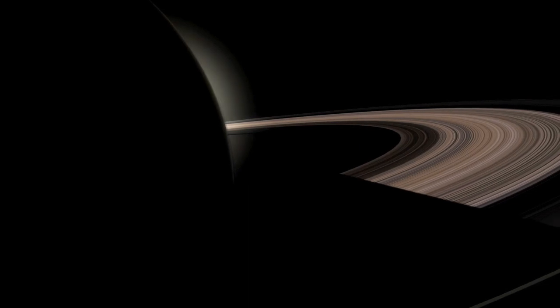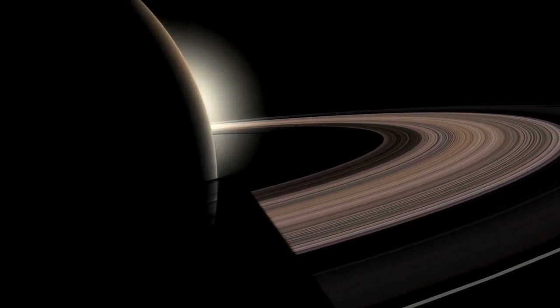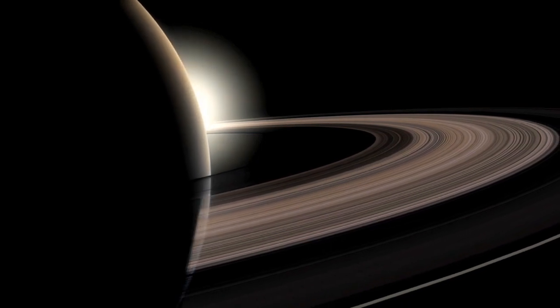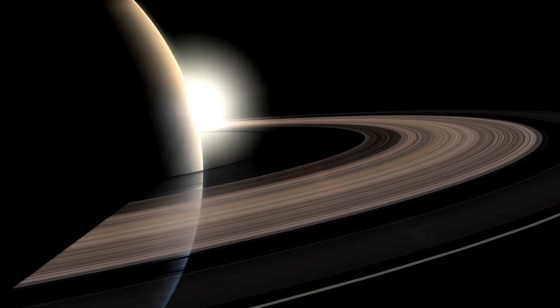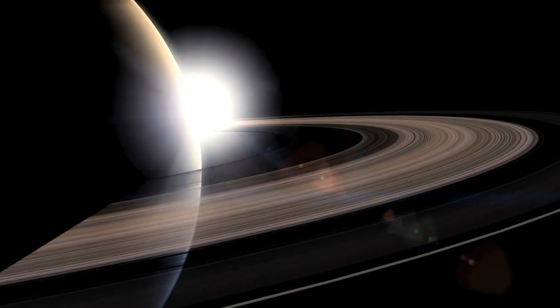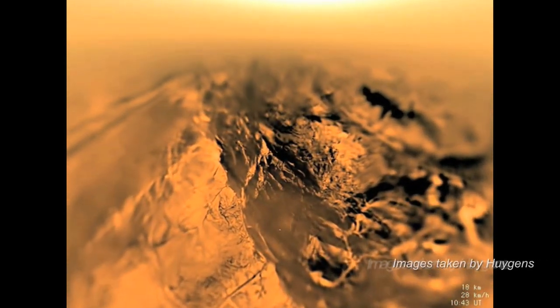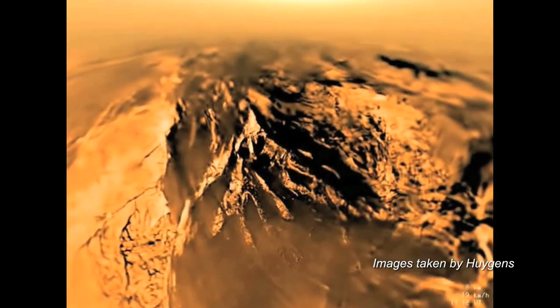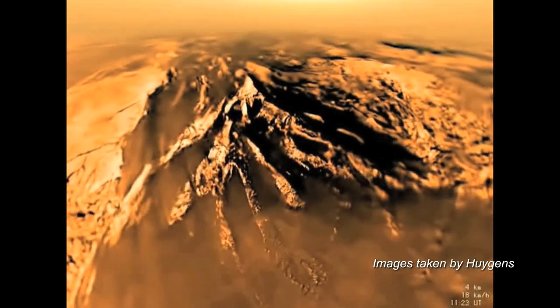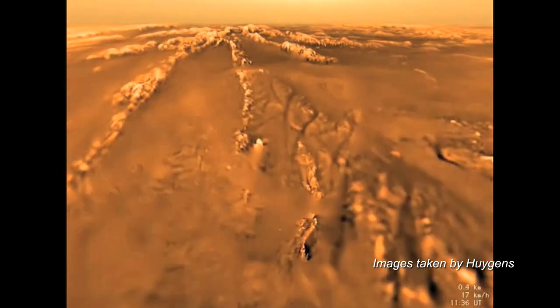After a journey of nearly seven years, the Cassini-Huygens spacecraft, made up of NASA's Cassini orbiter and ESA's Huygens probe, became the first to enter orbit around Saturn. In early 2005, the Huygens probe successfully traveled through the atmosphere of Saturn's largest moon, Titan, and touched down on the surface. This is the only landing to have taken place in the outer solar system, and the furthest from Earth.